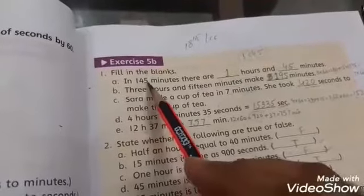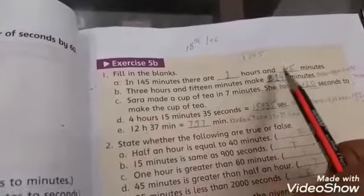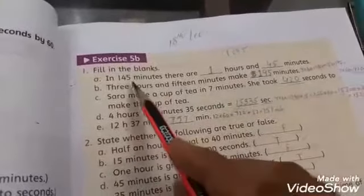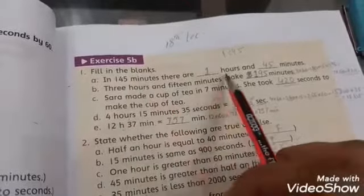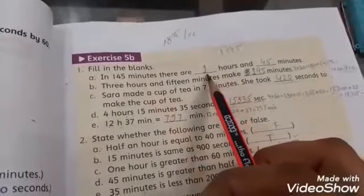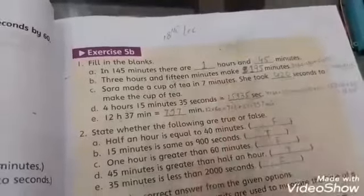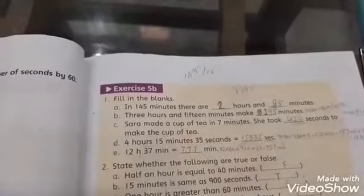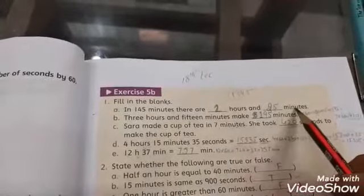In 145 minutes there are dash hours and dash minutes. One hour equals 60 minutes, so the answer is 2 hours and 25 minutes.